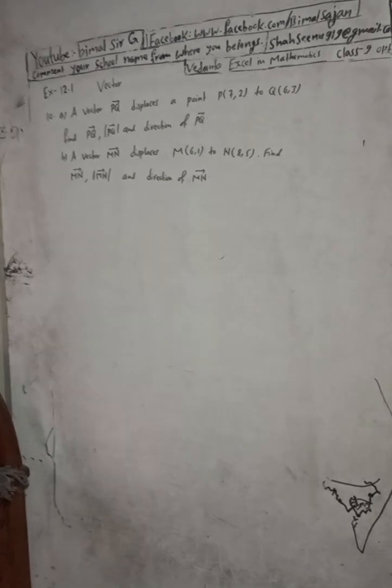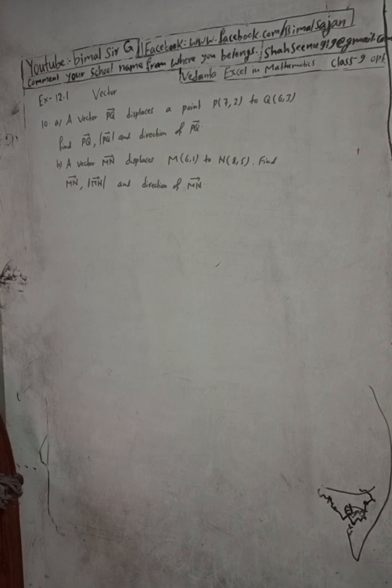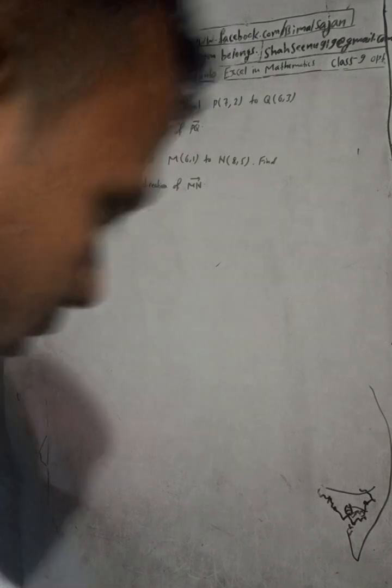Hi class 9 and 10 students, welcome back to Bimal Sarji's YouTube channel. This is question number 10, exercise 12.1 — Vectors from Vedanta Excel in Optional Mathematics class 9. This is the last question of exercise 12.1. I am going to complete all the exercises, so if any questions are missing, let me know through the comments.